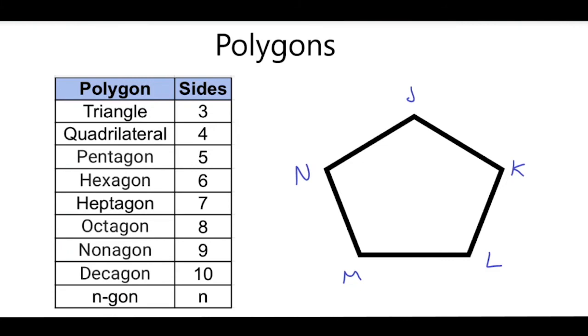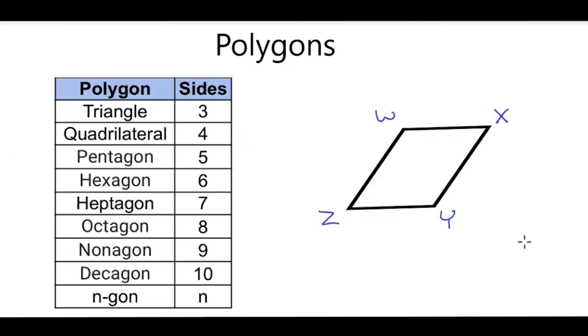So what would we call this one? Well, it has five sides. So we'll call this one a pentagon. So we'll call this one pentagon J, K, L, M, N.